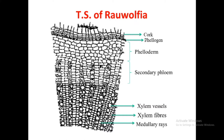The first zone, periderm, contains cork, phellogen and phelloderm. The cork consists of one to seven layers of small cells, containing a combination of both unlignified as well as lignified cells. The phellogen part is an indistinct part of the periderm.